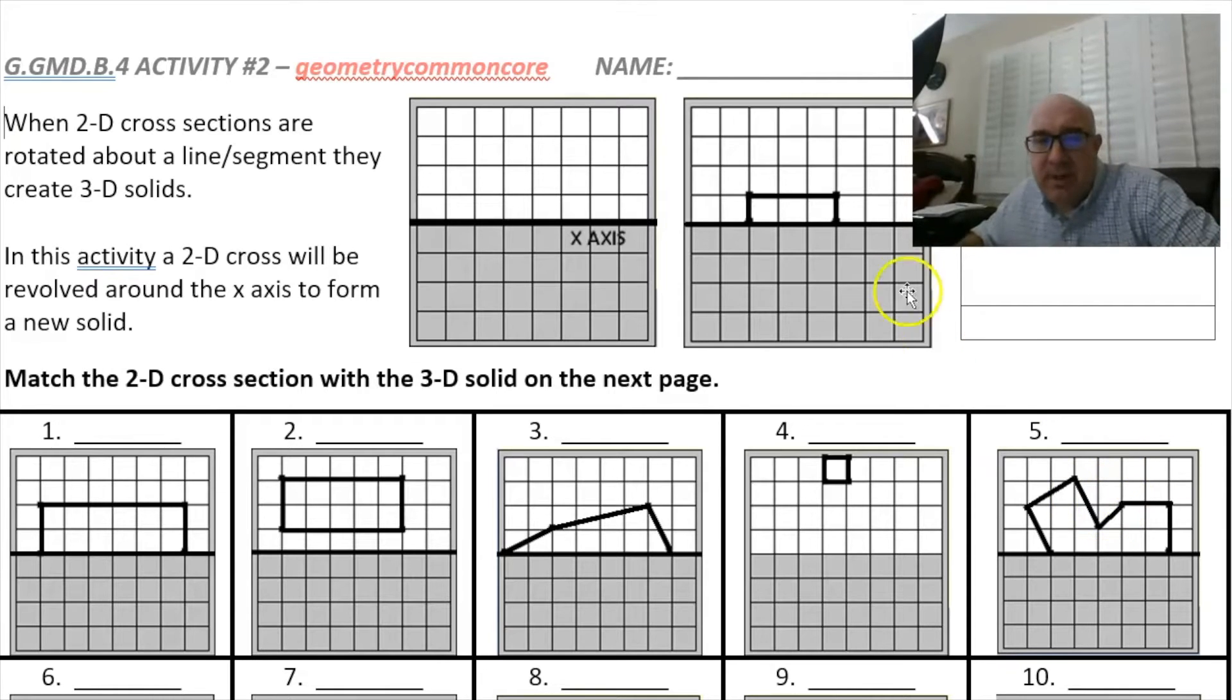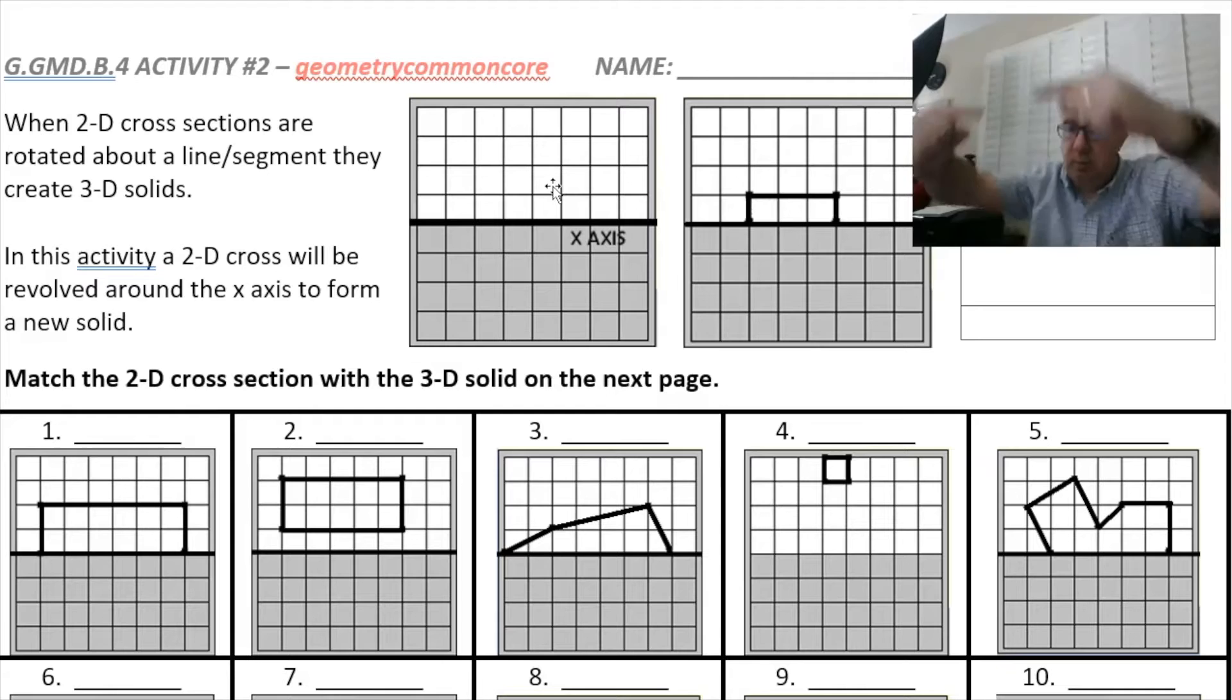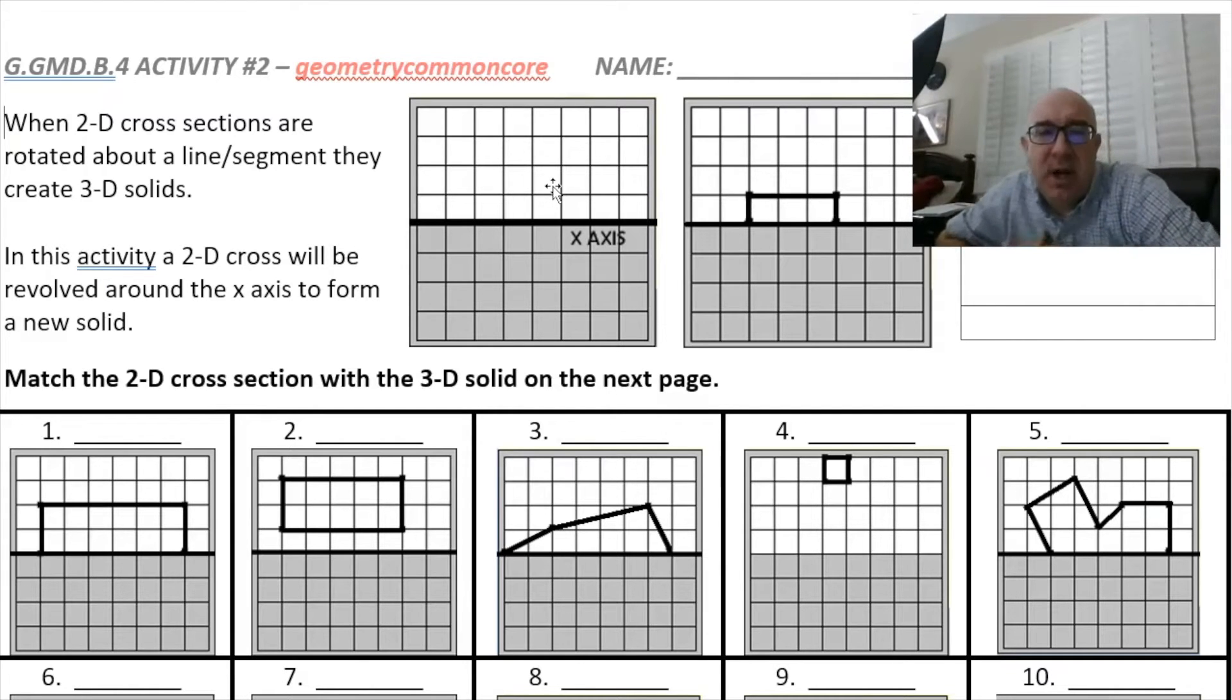So all of these work out that you have this picture with the white top and the gray in the bottom. Think of this as the x-axis and we're going to revolve around that x-axis. And the idea is what kinds of shapes are formed when you do that.